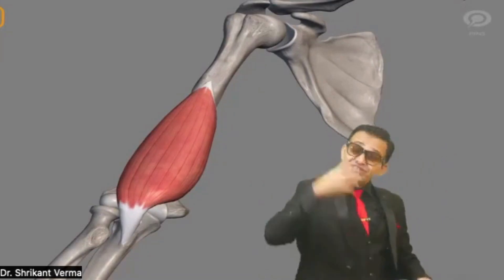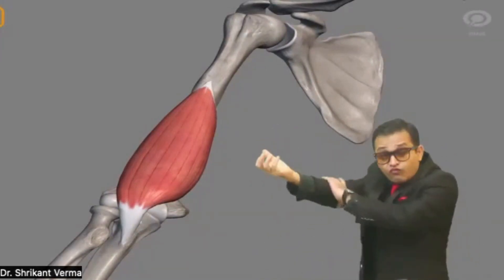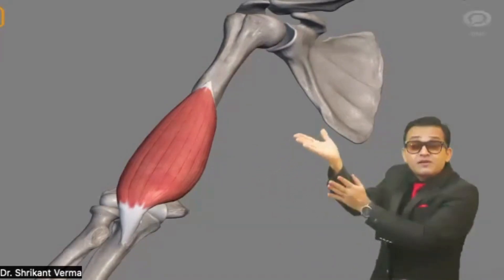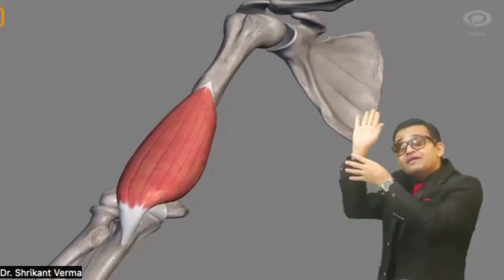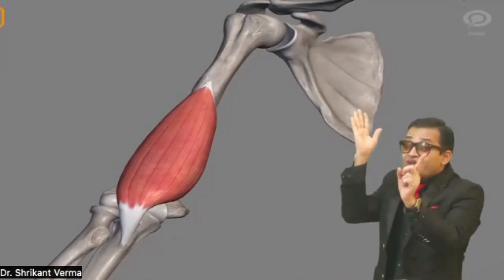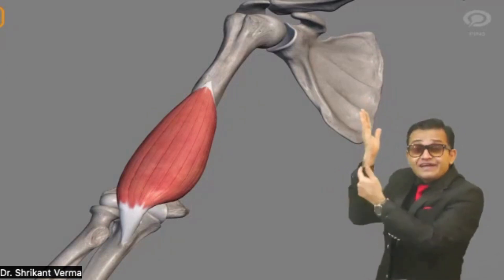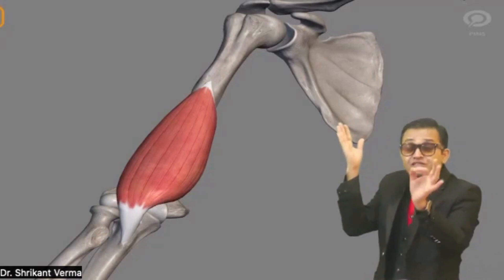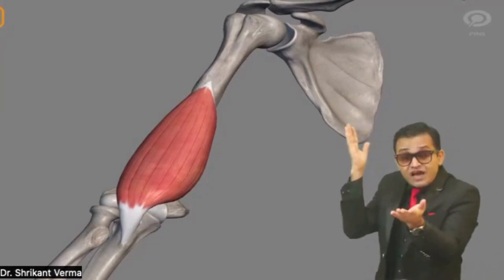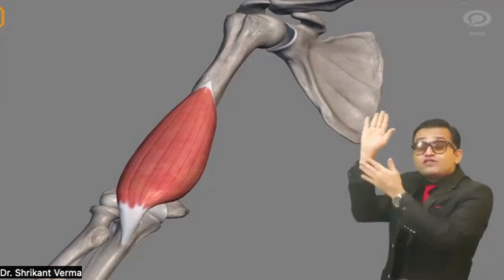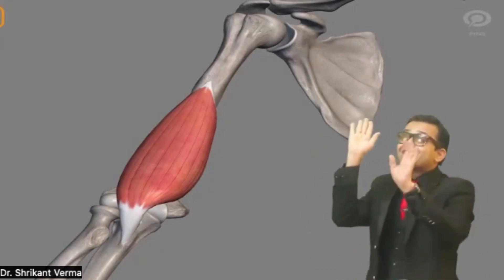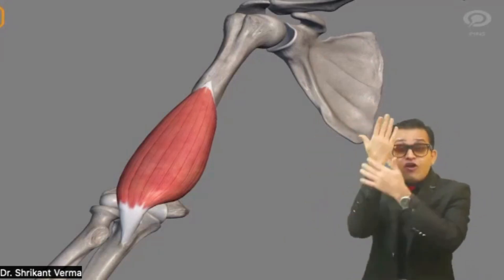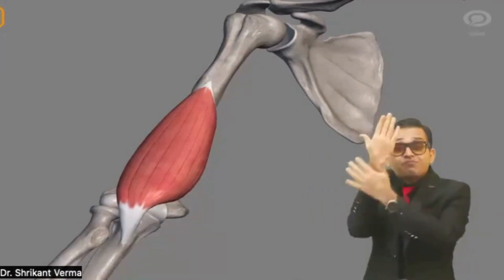Now look at the forearm. On the anterior compartment, there is the median nerve, so all muscles are supplied by the median nerve, except towards the ulna side where there is the ulnar nerve. The muscle on the ulnar side — flexor carpi ulnaris — is supplied by the ulnar nerve. So all muscles on the front of the forearm are supplied by the median nerve except flexor carpi ulnaris and the medial half of flexor digitorum profundus. On the back of the forearm, the radial nerve supplies all muscles.